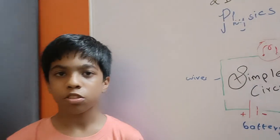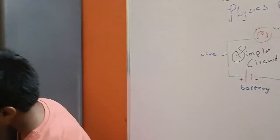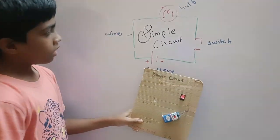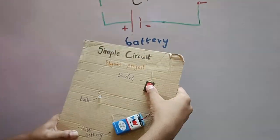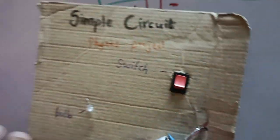Now I will show this practically. Now here the switch is in off position so the bulb is not glowing.